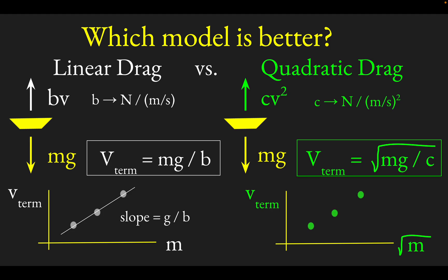When you plot your data, if the quadratic drag model were best, then that data would be linear, plotting V-terminal against root mass. In this case, the slope would be root G over this quadratic drag coefficient.